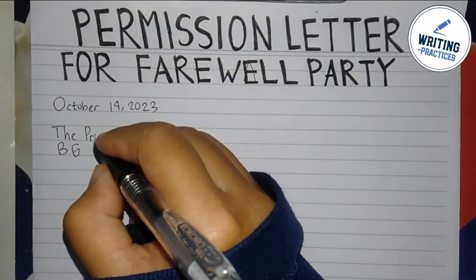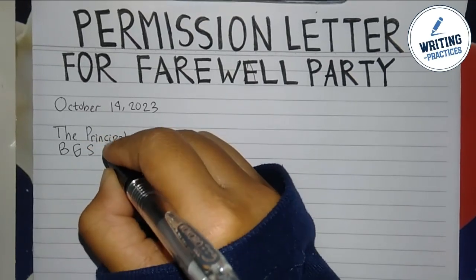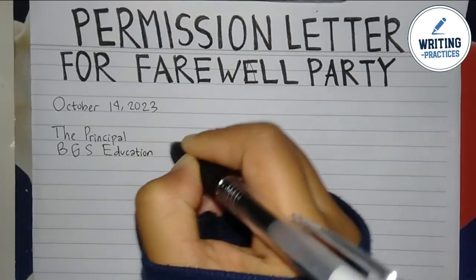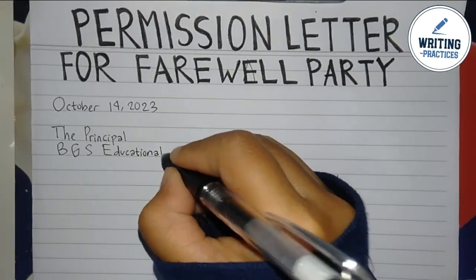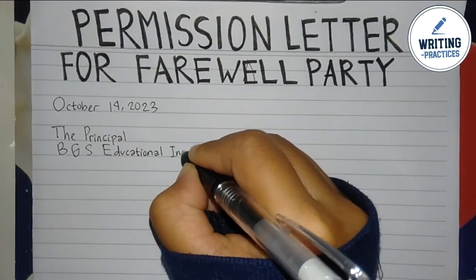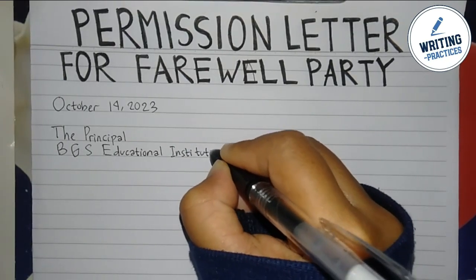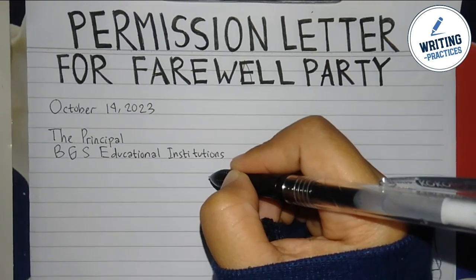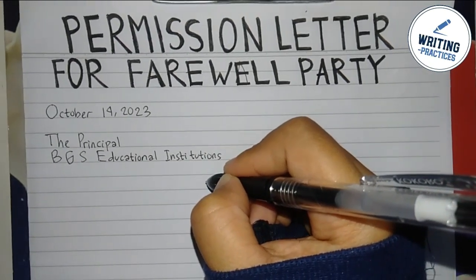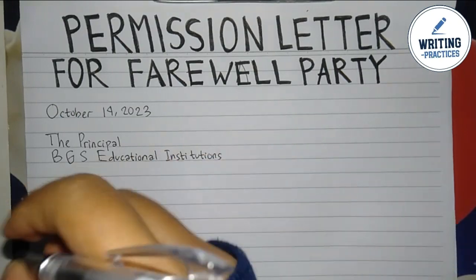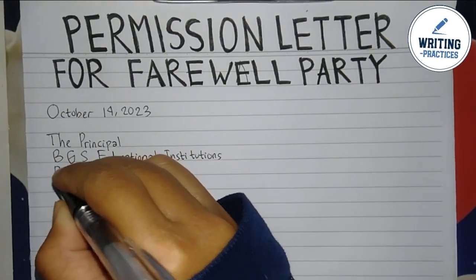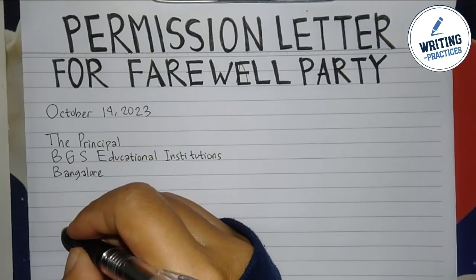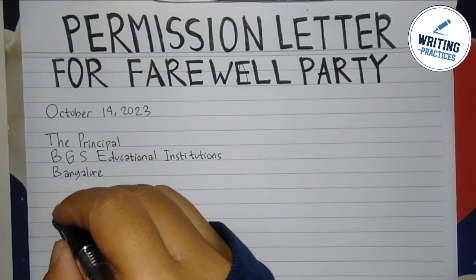Here Writing Practices will show you how to write a permission letter for a farewell party step by step. First thing first, write the date — in this example it is October 14, 2023. Then write the recipient information. In this example the letter is for the principal. You can either write 'the principal' or directly write his or her full name, then write the organization, school, or company name, and the address or just the city since you are in the same building or area. Once you are done with the recipient's information, write the subject of the letter.